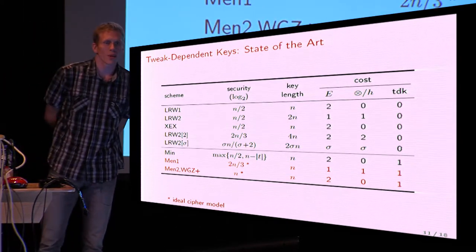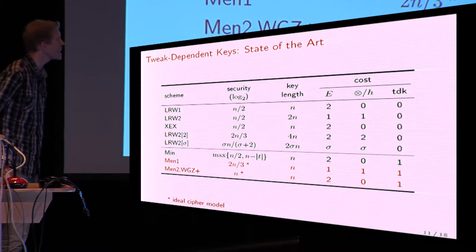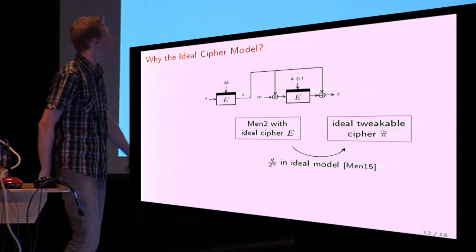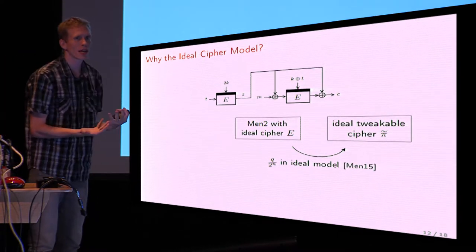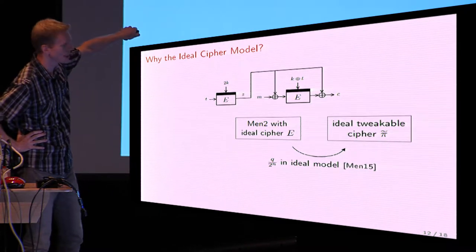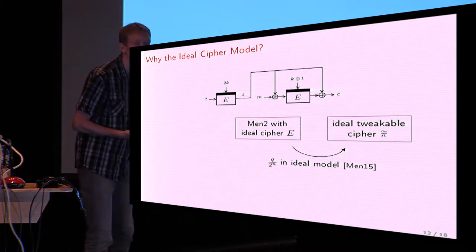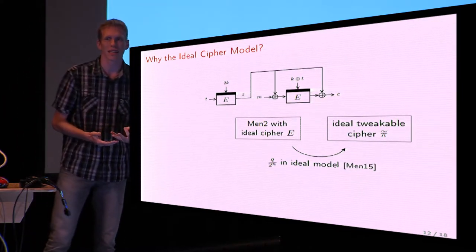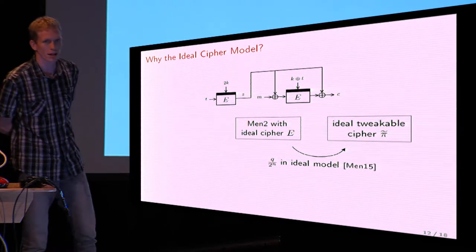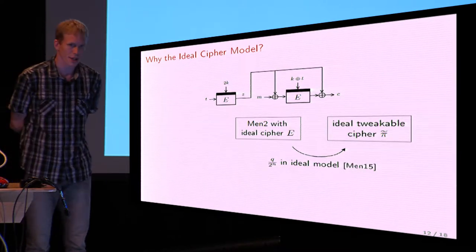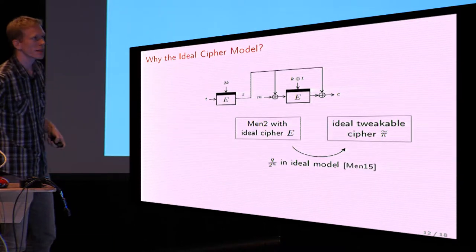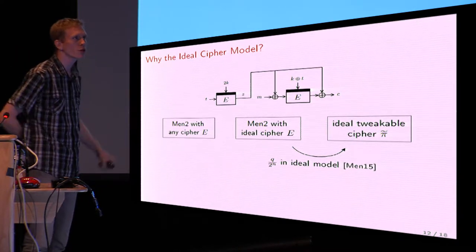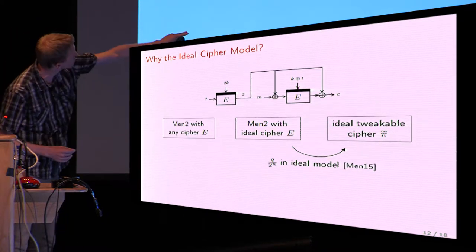To try to get this, we have to dive into the proof technique. If you look at this optimally secure scheme, the proof essentially goes as follows: we consider this scheme with an ideal cipher and compare it with an ideal tweakable permutation π̃. It's essentially a probabilistic argument showing that if an attacker wants to distinguish the scheme based on an ideal cipher E from an ideal permutation, it succeeds with probability at most q/2^n, which means the attacker needs 2^n evaluations — optimal security. Now suppose we want to prove the scheme in the standard model, starting from any block cipher E, proving it is indistinguishable from π̃.